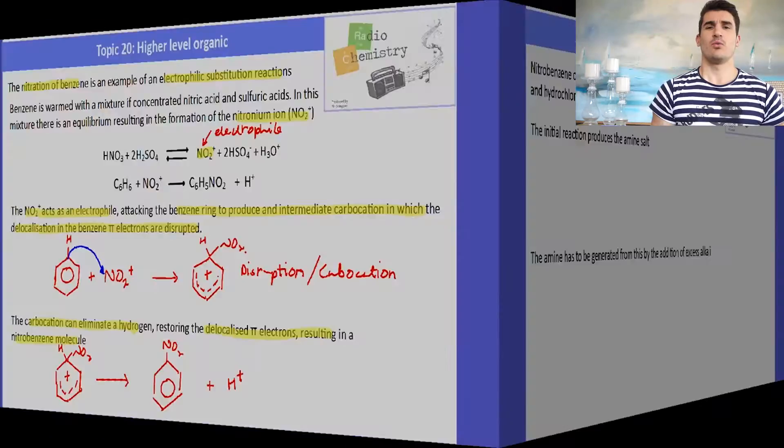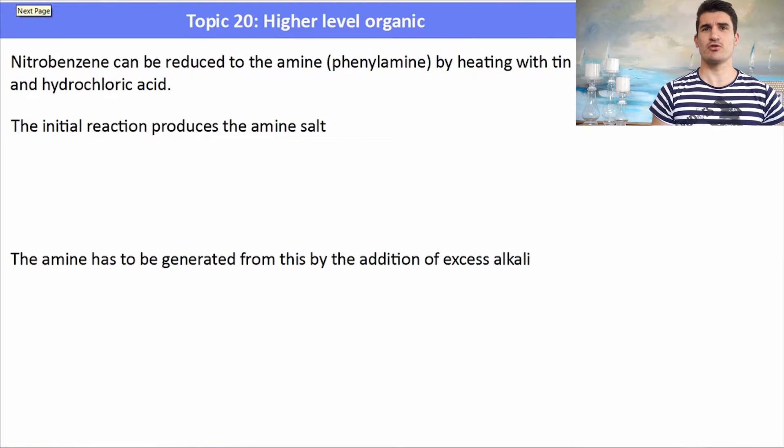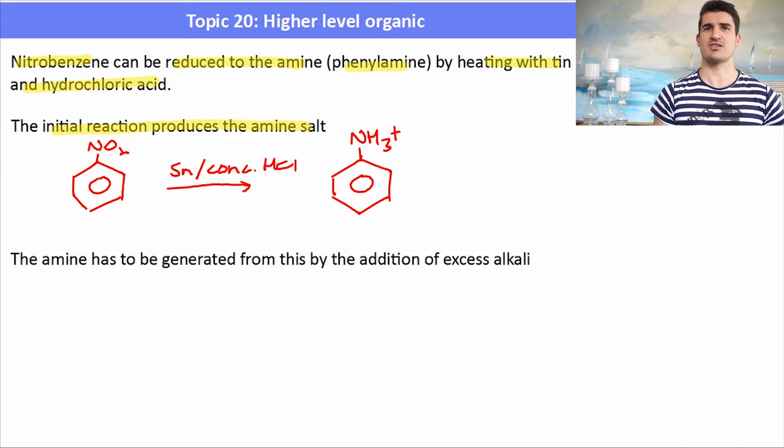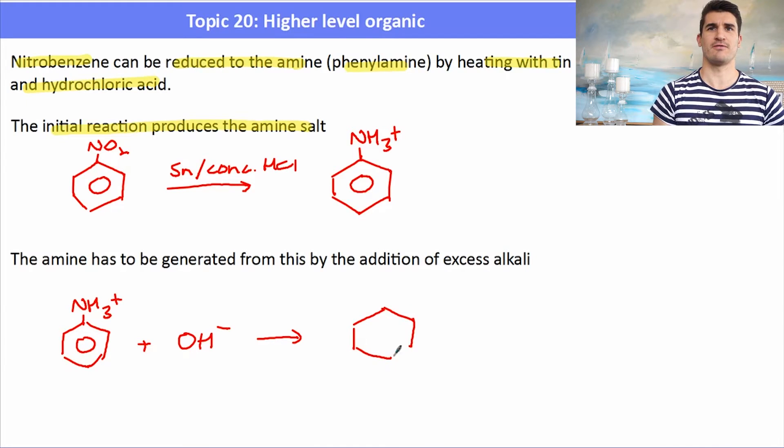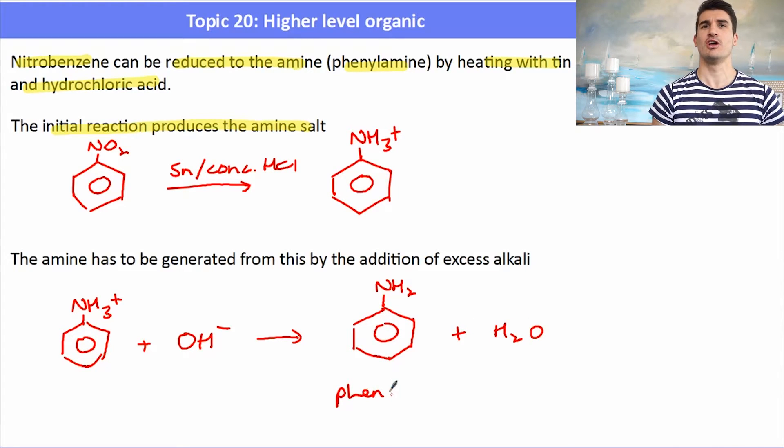Once we form nitrobenzene, we can reduce that even further to form an amine, phenylamine, by heating it with a tin catalyst and hydrochloric acid. The initial reaction produces an amine salt. We react that with tin and concentrated hydrochloric acid to form an ammonium salt of the phenylamine. Once we form the ammonium salt, we need to get rid of its acidic properties by doing an acid-base reaction with hydroxide (OH-) to form our phenylamine.